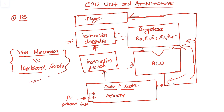So this is all about this video, in which we discussed what the CPU unit is and its architecture. Loosely, the CPU is made up of the ALU, registers, instruction decoder, instruction fetch, flags, and of course memory. Thank you so much for watching — please subscribe to this channel so you can get updates directly in your inbox. See you next time, bye bye, have a nice day.